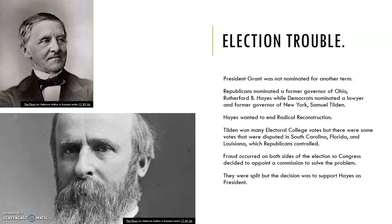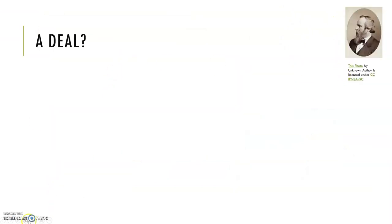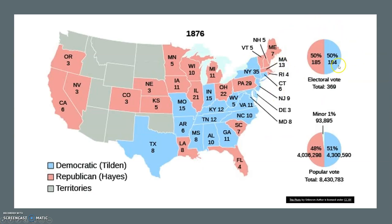There was election fraud on both sides. Congress decided to appoint a special commission to solve the problem. The group was split, but the overall decision was to support Rutherford B. Hayes as president. Looking at the election map, you can see how close this election was — red states for Hayes, blue states for Tilden, with Louisiana, Florida, and South Carolina being very close.